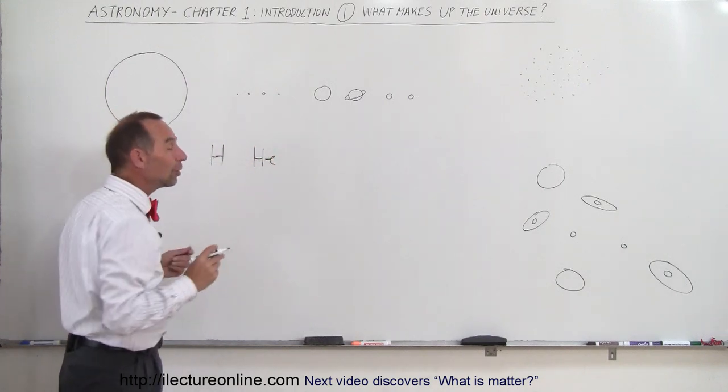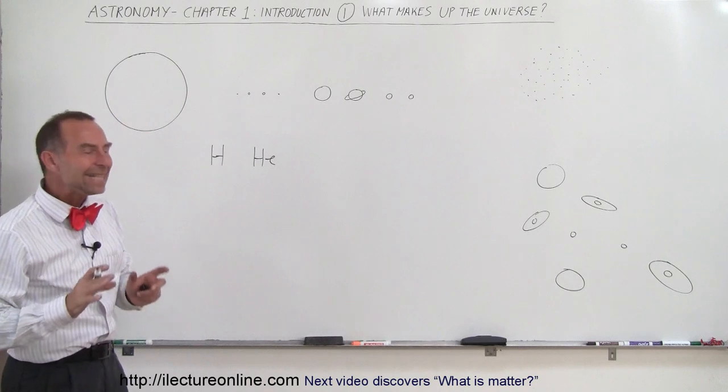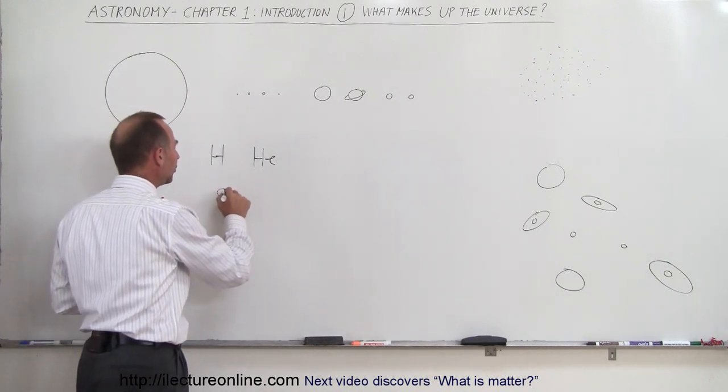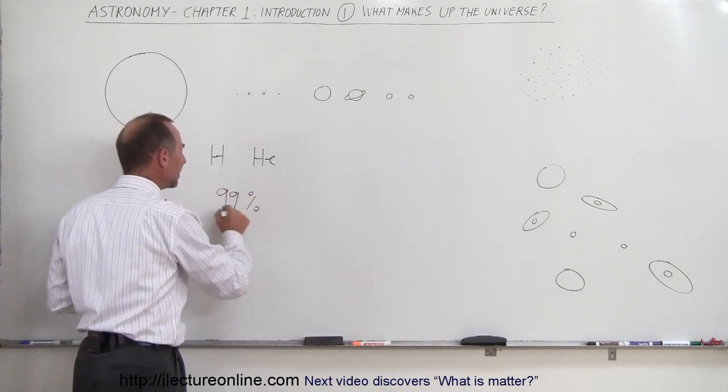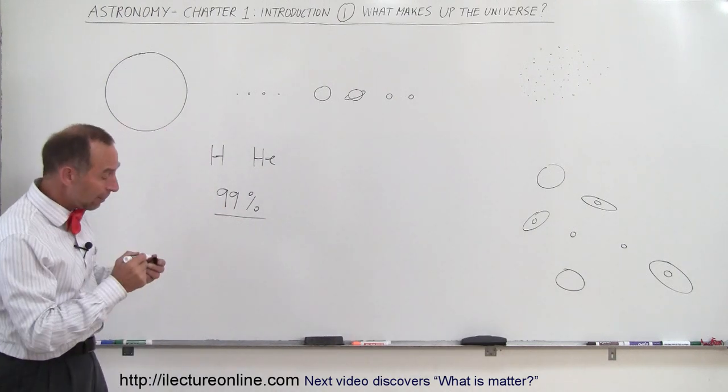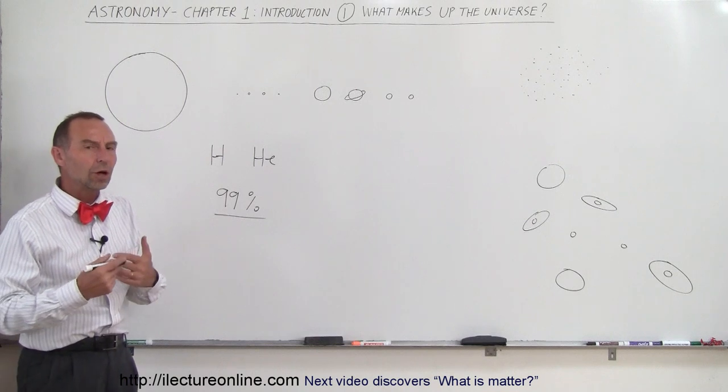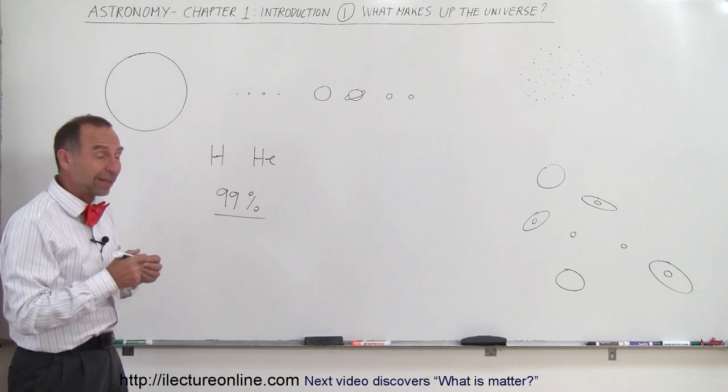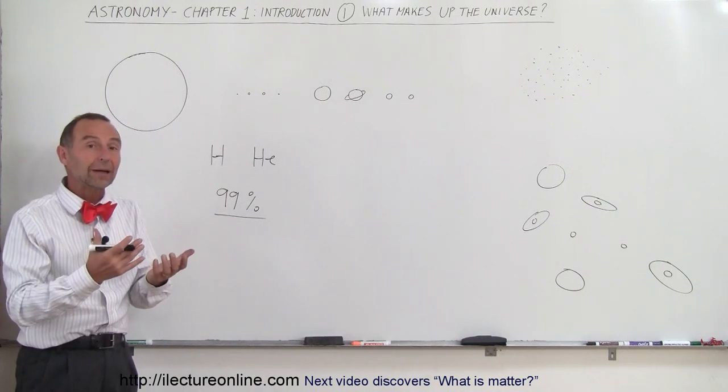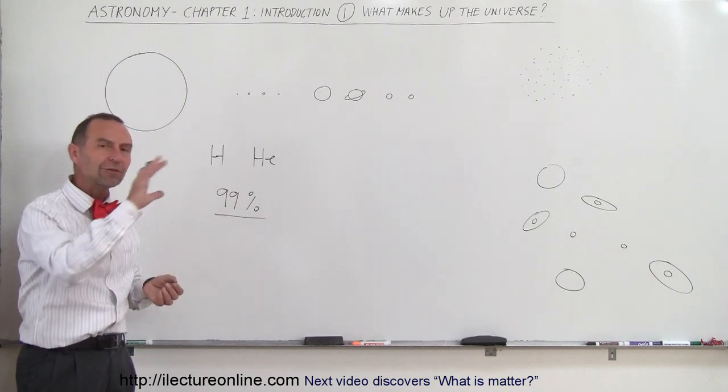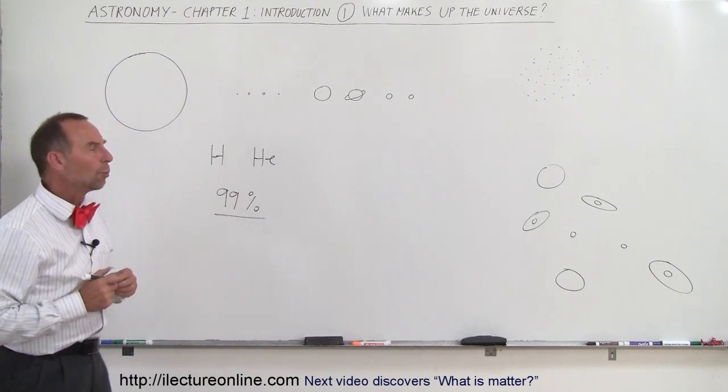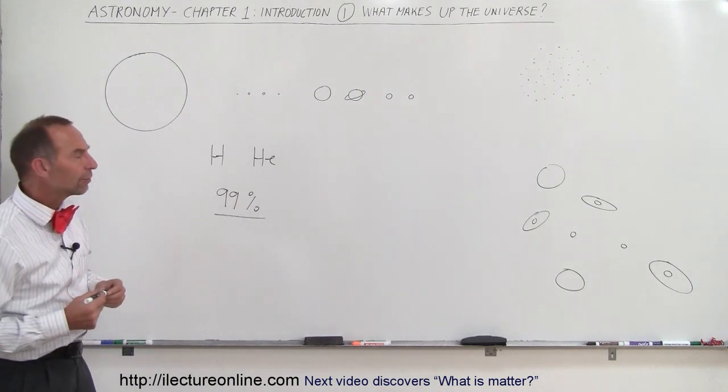About 99% of all the visible matter in the universe is hydrogen and helium. And yes, I did say visible matter. Make a special point of that, because there's also invisible matter, something we call dark matter. It seems like there's a lot more dark or invisible matter than visible matter, but that's for a later chapter.